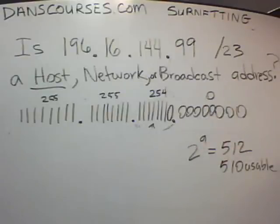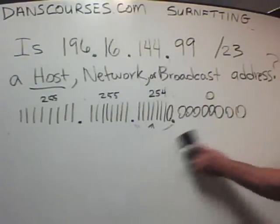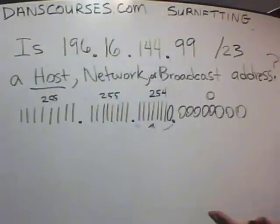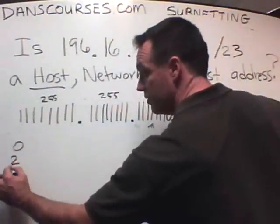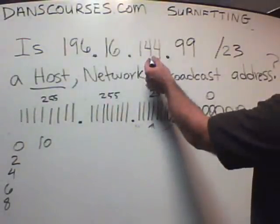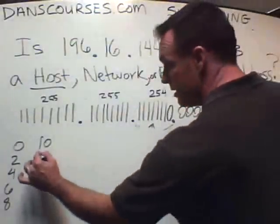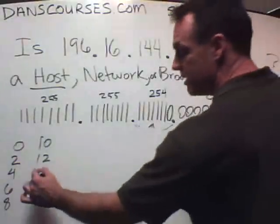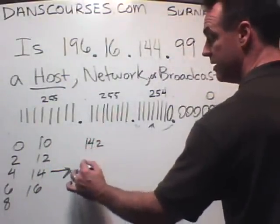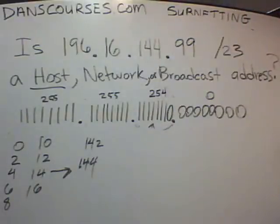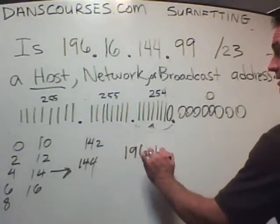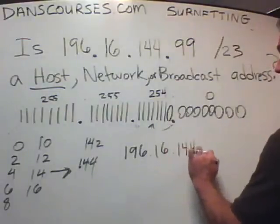But back to it — the magic number is 2. That means the networks go up by 2: 0 is the first network, 2 is the second, then 4, then 6, then 8, then 10. We can just count up by 2s until we get to 144. So the networks go all the way up to 142, and the next network will be 144. So the network number in this case would be 196.16.144.0.